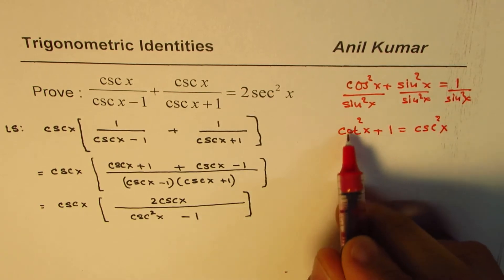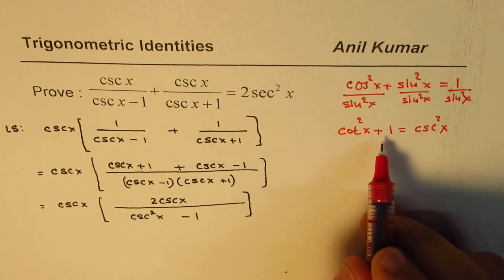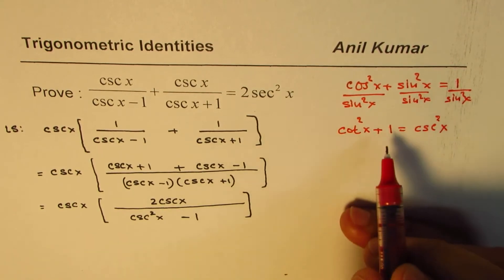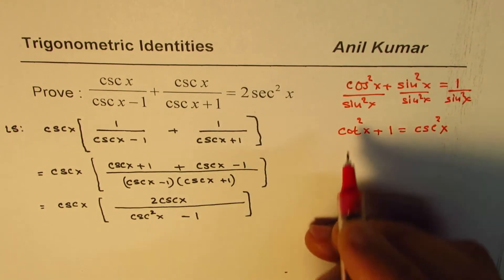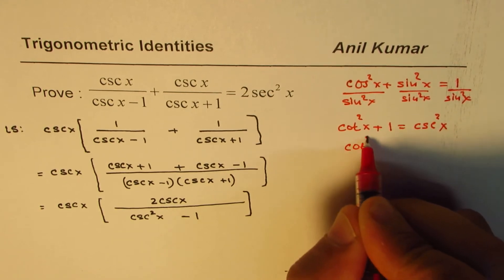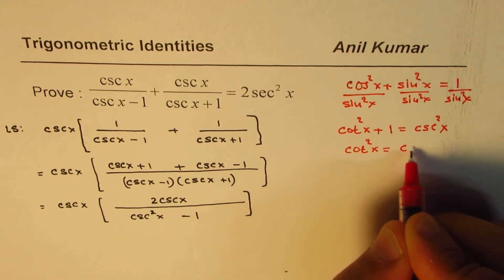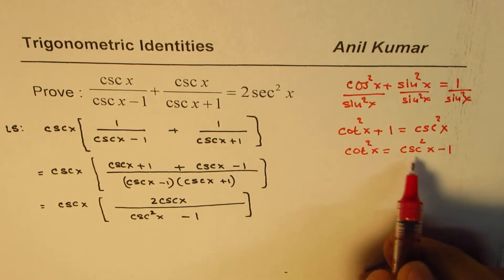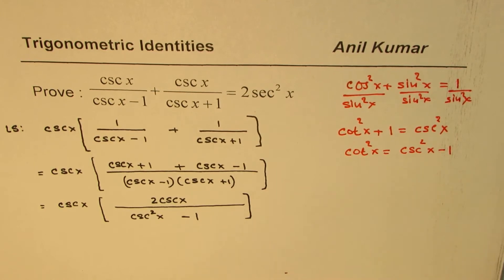So, cosecant square x is cot square x plus 1. That is the identity which we can use. Cosecant square x minus 1 is cot square x. We write this as cot square x equals to cosecant square x minus 1. That is also we can write this identity as. So, let's do this.